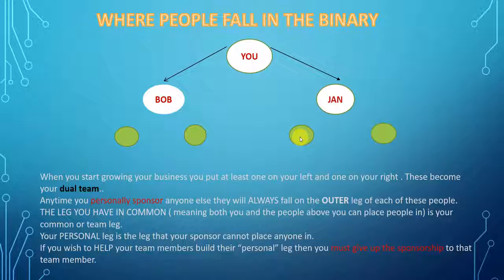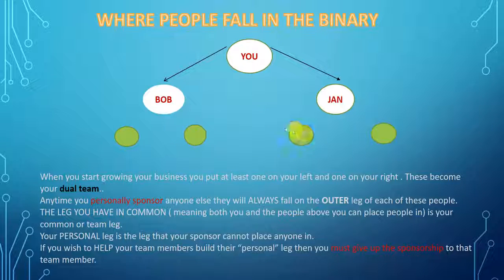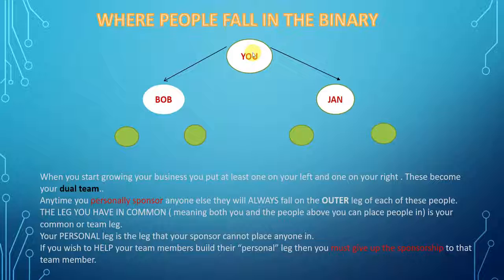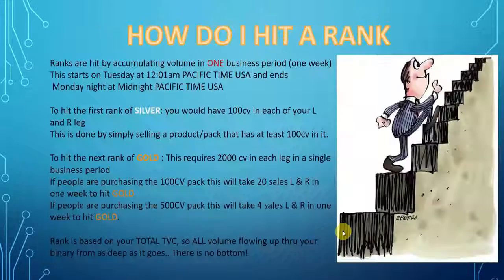How do you help Jan and Bob if you're a good recruiter and want to get them to team developer? You can give away the sponsorship to Bob or Jan, and they can place those people on their inside leg. Keep in mind that anytime you sponsor people after your first two, they will always fall to the outside of the leg you place them in — they will never fall to the inside of Bob or Jan.